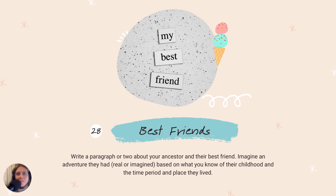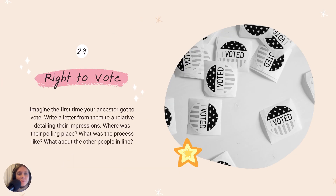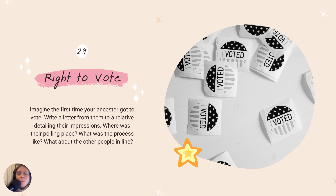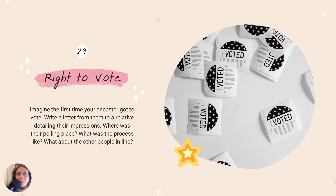Best friends — we've all had best friends in our lives. What did your ancestor's best friend look like? If you don't know, make it up. Maybe they went on an adventure or got into a little bit of trouble. Right to vote — imagine the first time your ancestor got to vote. Maybe they'd just turned 18, or maybe they were an African-American ancestor or a female ancestor — what did that feel like? What was the process like? Maybe people are staring at them angrily. You can really create a great narrative here.